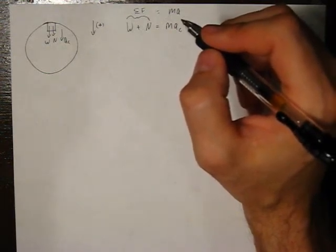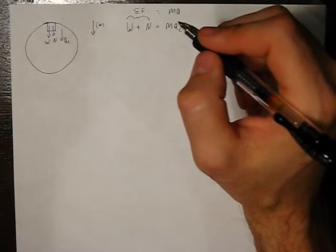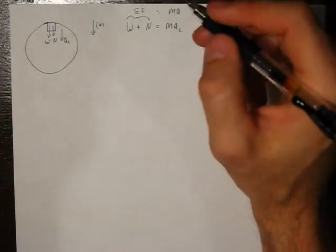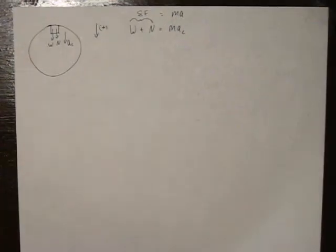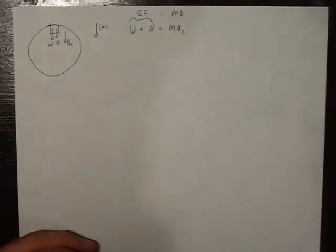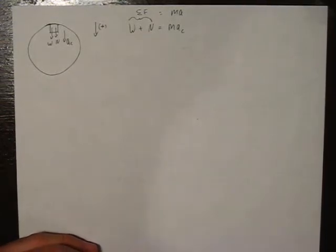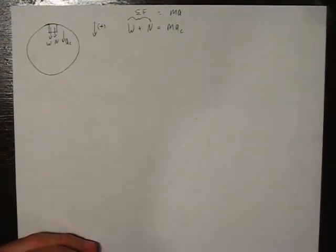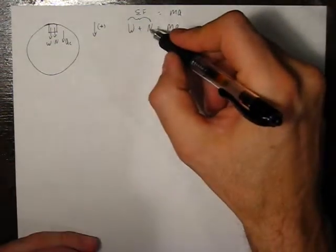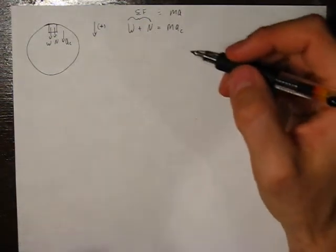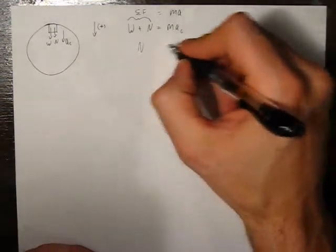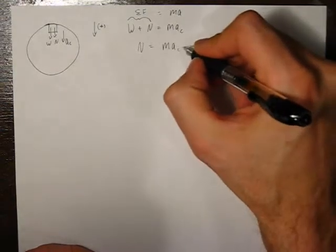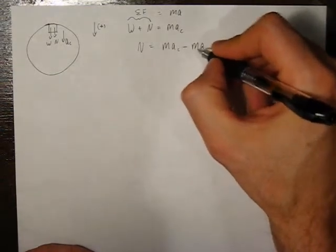Well, one interesting part about going around in loop-de-loops is that you feel lighter as you're going around the top. This should make intuitive sense because you know that when you're at the top of a roller coaster going over the loop, you feel lighter. But it also makes mathematical sense because if we solve for n, n being the force you feel, the force of something pushing into you, the normal is equal to m a c minus m g.